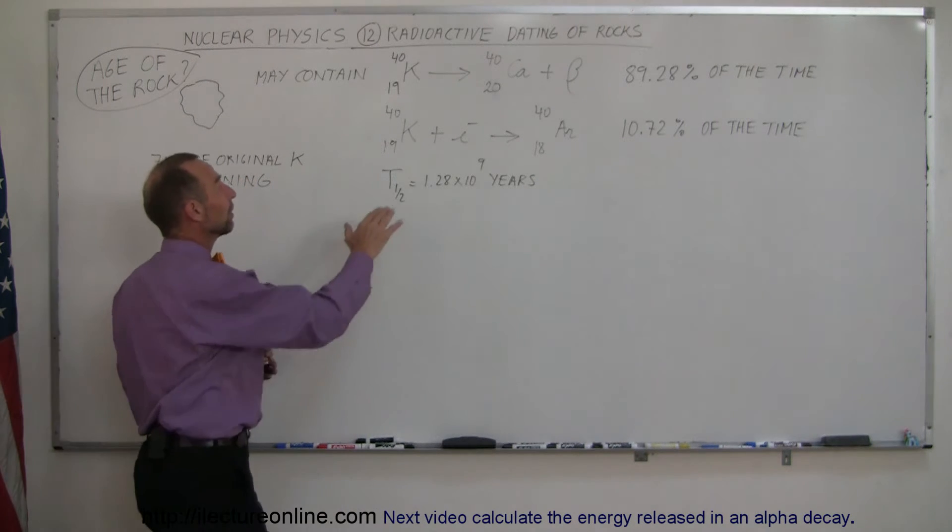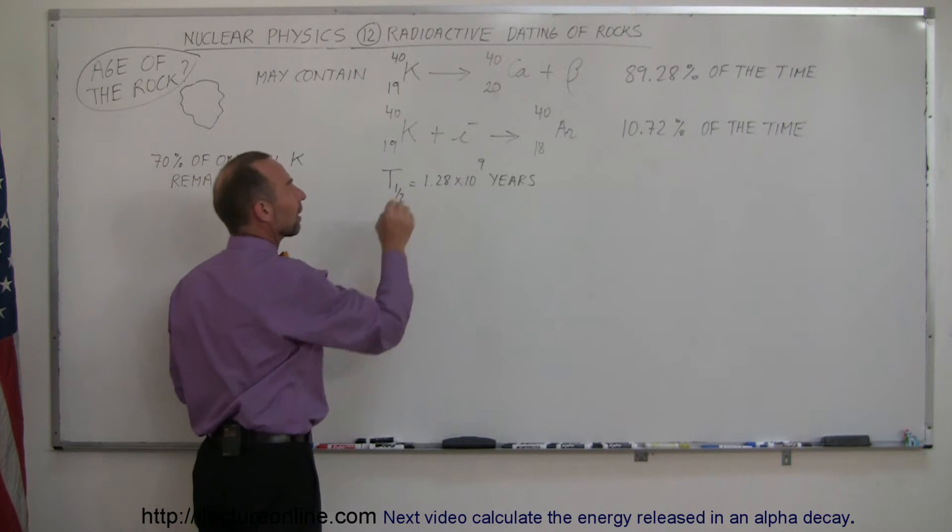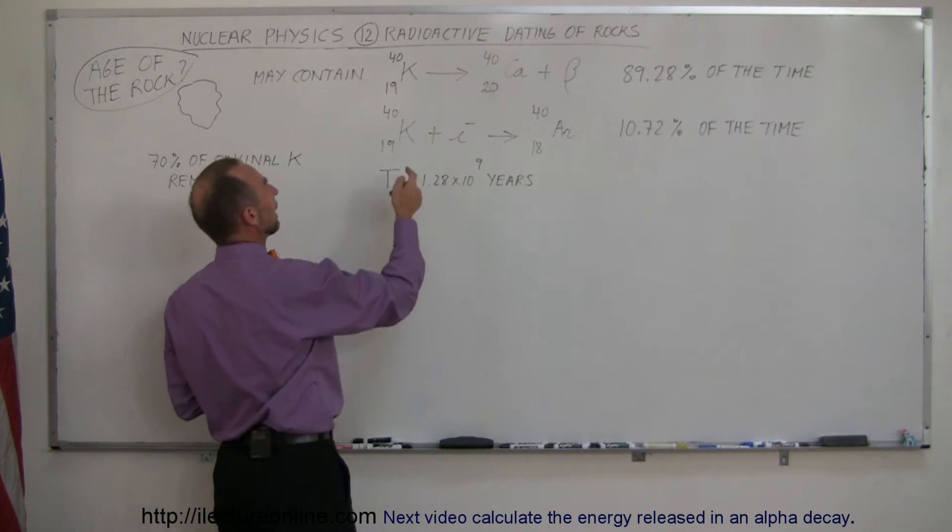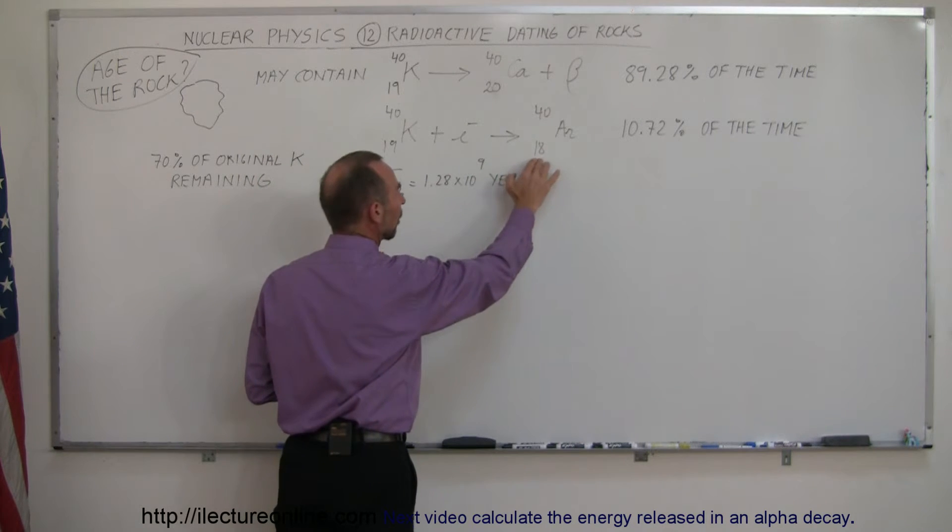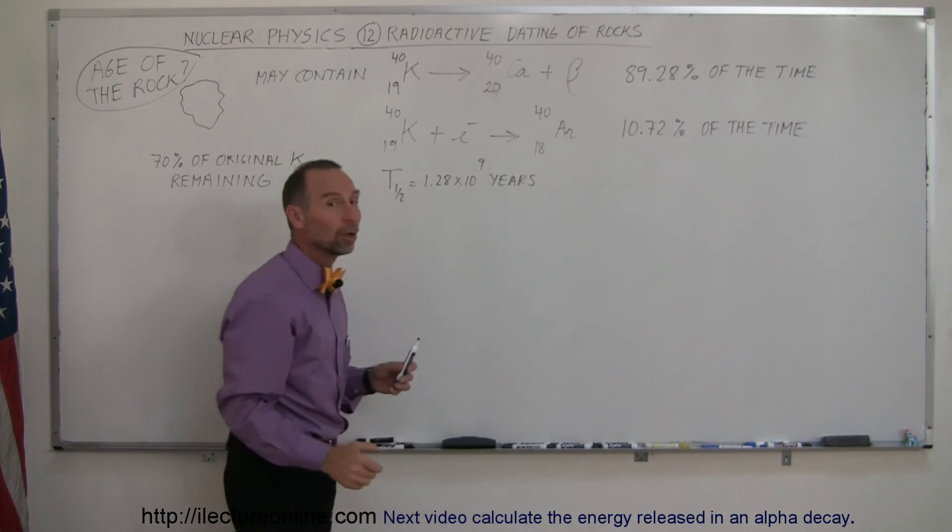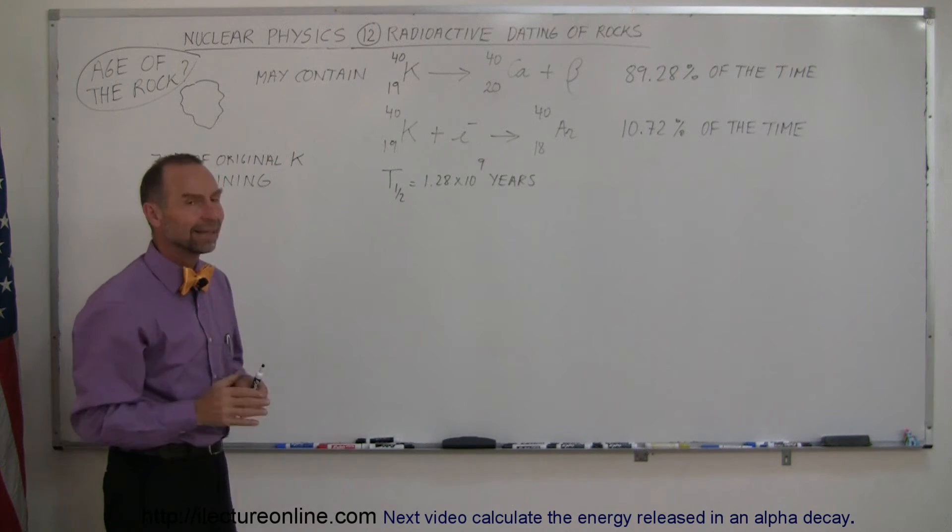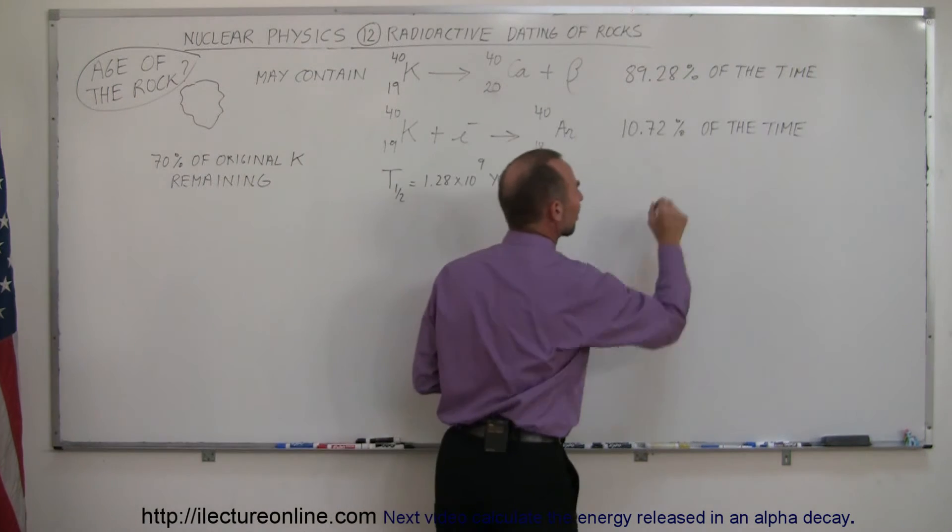Sometimes, however, potassium will capture an electron and turn a proton into a neutron. So instead of having 19 protons, it now only has 18 protons, therefore turning it into argon, which is of course a noble gas. That happens 10.72% of the time.